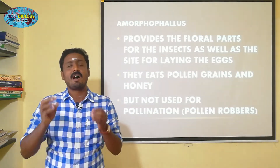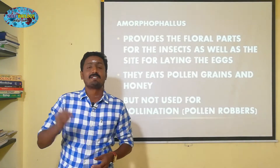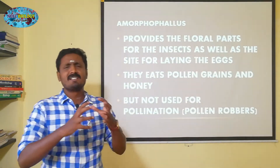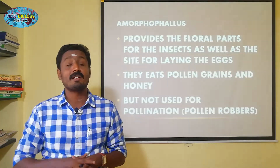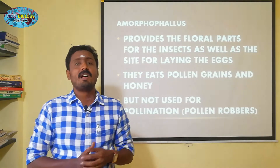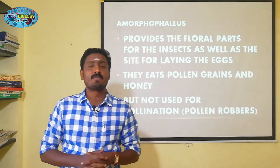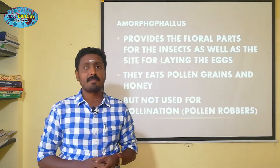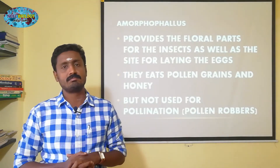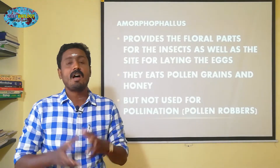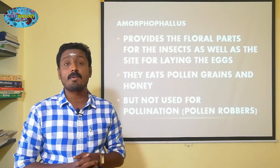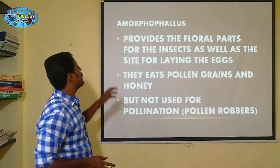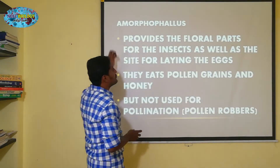However, if we look at the plant, we can see the facilities it provides for the insect. We can do insect pollination. We can see a plant in the same place. What is the plant? Amorphophallus.